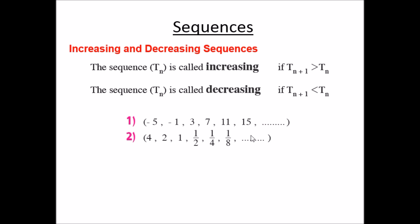To understand increasing and decreasing sequences: in the sequence 3, 7, 11, 15, each term is greater than the previous term — the sequence is increasing. In a decreasing sequence, each term is less than the previous one. So if T(n+1) > T(n), the sequence is increasing; if T(n+1) < T(n), the sequence is decreasing.